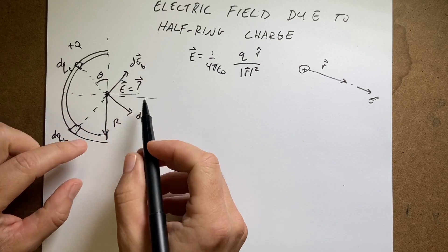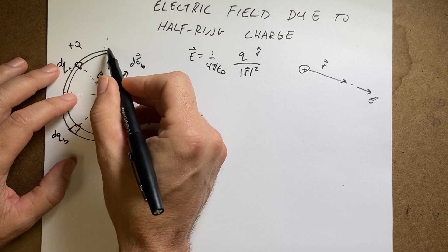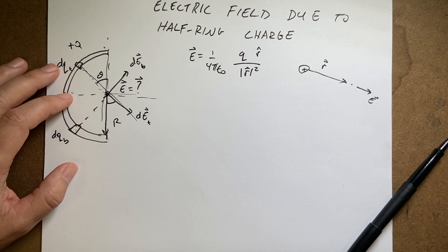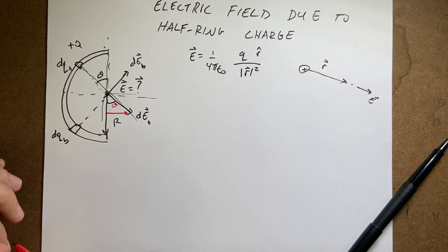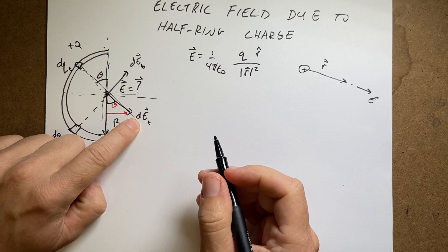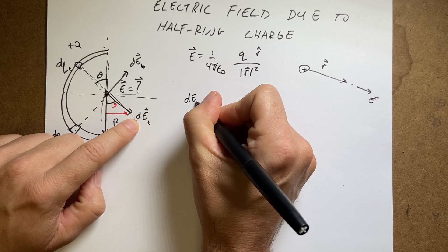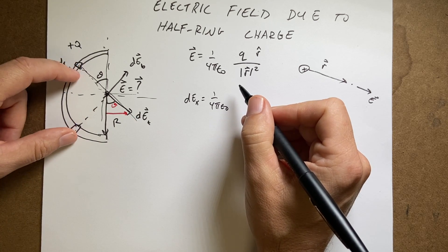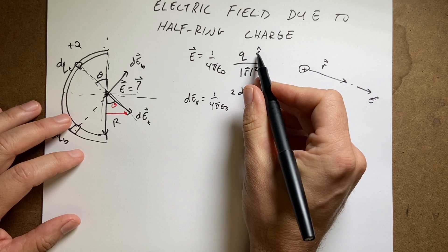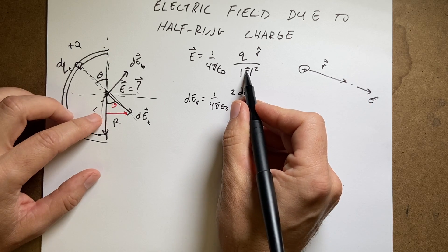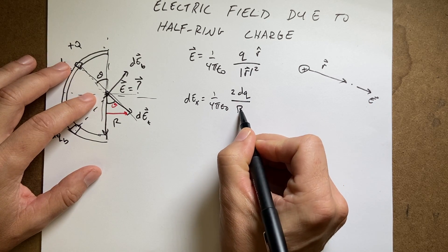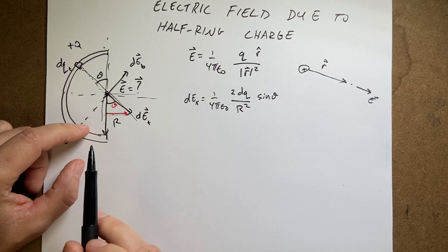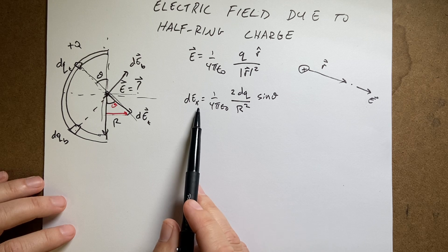Let's write an expression. If this is the angle theta, then this is the angle theta, because these are corresponding angles. The x component is right here, and that angle's theta, so that's going to be sine of theta. So let me write an expression for dEx. It's going to be 1 over 4 pi epsilon naught. Instead of q, I have 2 dq, because I'm using two of these charges at the same time. The magnitude of r is this big R squared. Now I need to multiply that by sine of theta, because E sine theta gives me the x component. So this is my electric field due to these two pieces right there.